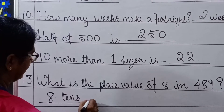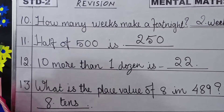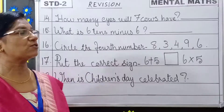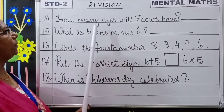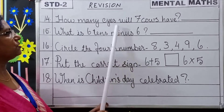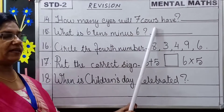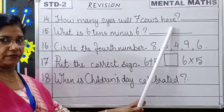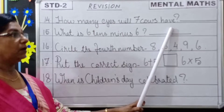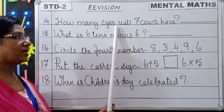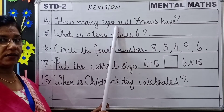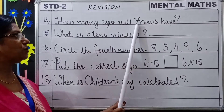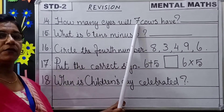Next question: How many eyes will 7 cows have? 1 cow has how many eyes? 2 eyes. So 2 into 7 is 14.